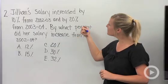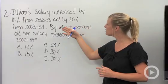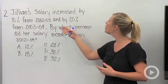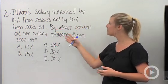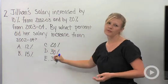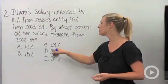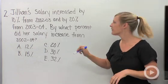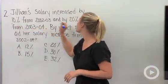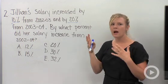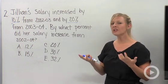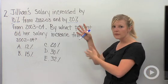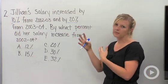Here we have a question that's going to show up on the PSAT. Not necessarily this question itself, but percent increase always shows up on the PSAT and the SAT, so it's important to know the strategy. Here we go. Jillian's salary increased by 10% from 2002 to 2003 and by 20% from 2003 to 2004. By what percent did her salary increase from 2002 to 2004? We have a range of percents for our answer choices, anywhere from 12 to 32%.